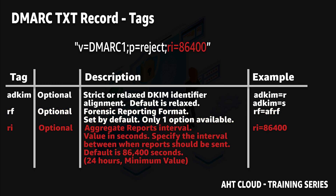The last available tag you can use is the ri tag. This is also an optional tag — it allows you to specify the aggregate report interval in seconds. The minimum and default value is 86,400 seconds, which equates to 24 hours. This means every 24 hours you will receive a DMARC aggregate report. I recommend you keep it set to the minimum.